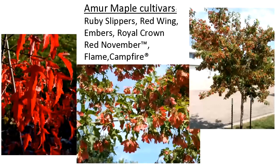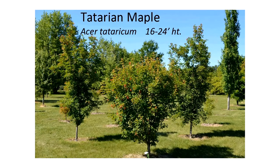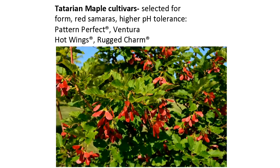Very closely related to Amur maple is Tatarian maple — in fact, one is a subspecies of the other. Tatarian maple is a little heavier tree, a little more upright, and more easily trained into a single stem. There have been a number of forms introduced, several selected for real red samaras. Hot Wings is the one that's really popular; Rugged Charm is another. Tatarian maples are not as brightly fall-colored as Amur maple — more of a yellow to yellow-orange — but have a more substantial tree form.